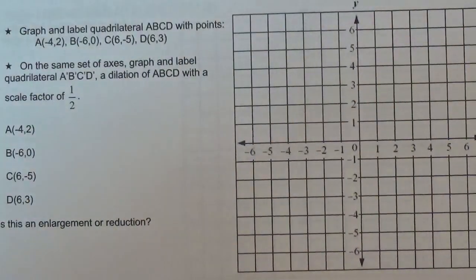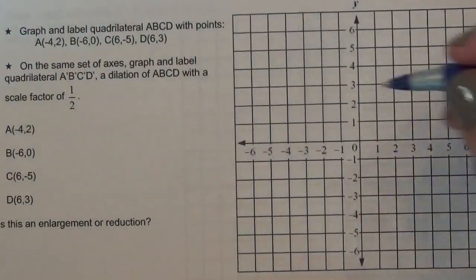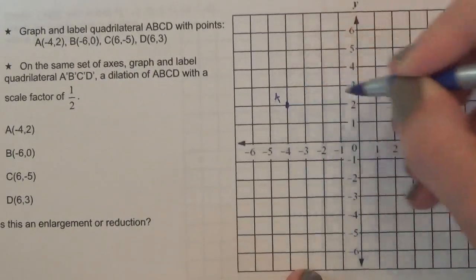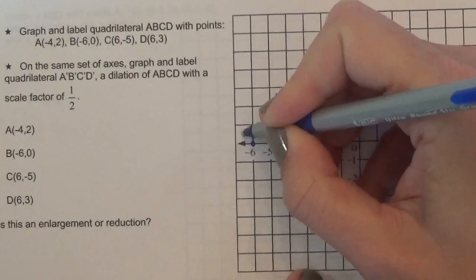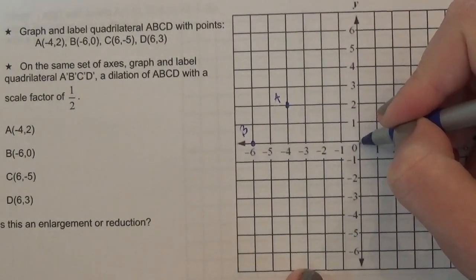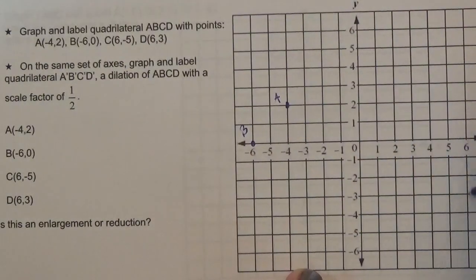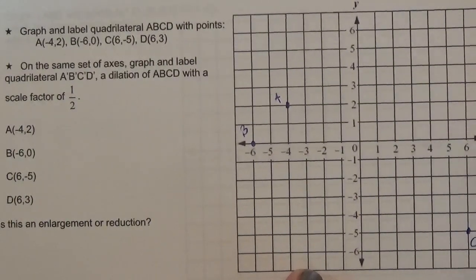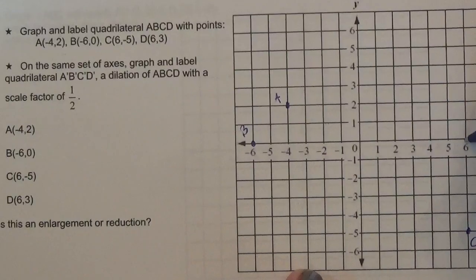Let's try this. Graph and label quadrilateral ABCD with points: A is negative 4, 2. B is negative 6, 0. C is 6, negative 5. And D is 6, 3.